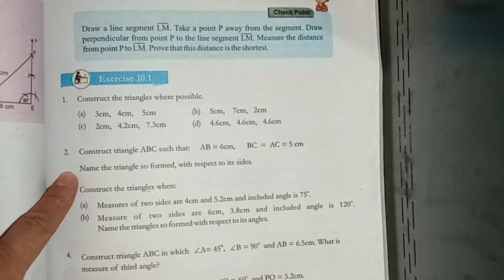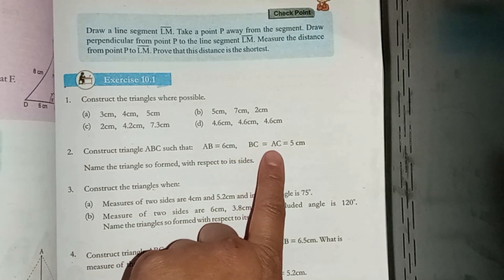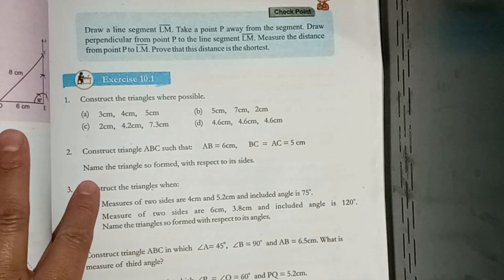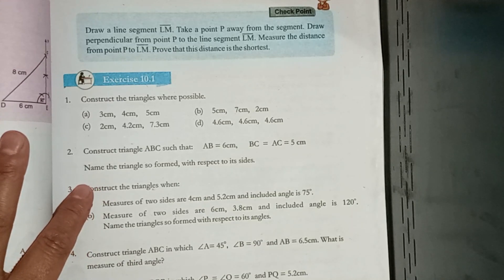The question is: construct triangle ABC such that AB equals 6 cm, and BC and AC both equal 5 cm. Then we have to name the triangle formed with respect to its sides.